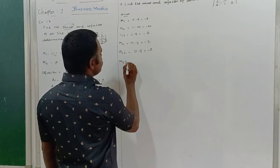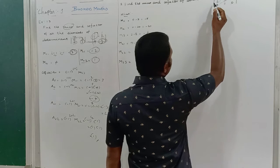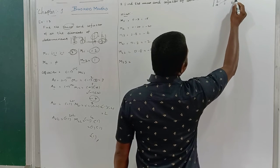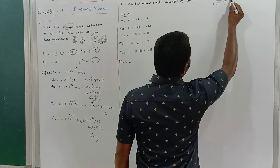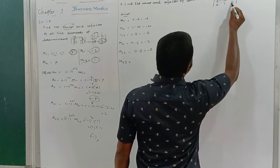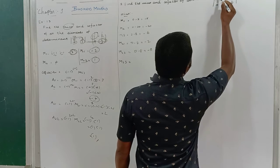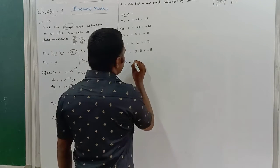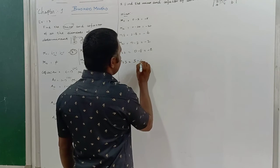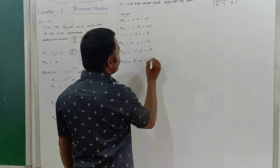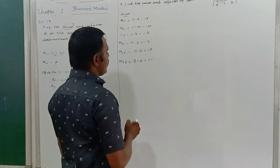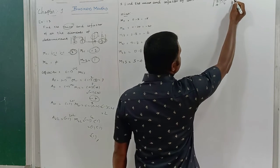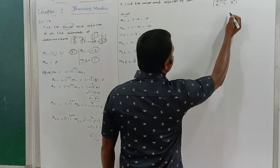Minor M23: second row, third column. I remove those two terms, leaving 3 and minus 4. So 3 minus 4 = minus 1. M23 = minus 1, the minor of the element at second row, third column.